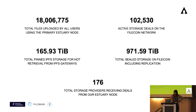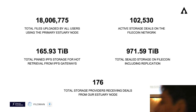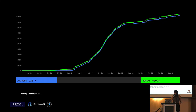Estuary performance: we have 18 million total files uploaded by all users using the primary node. We have 165.93 terabytes of total pinned IPFS storage for hot retrieval. 102,530 active storage deals on the Filecoin network. 971.59 terabytes of total sealed storage on Filecoin including replication. And 176 total storage providers receiving deals from our Estuary node. The trend since April 2021 shows the amount of onboarded data to the Filecoin network is continually increasing day after day.